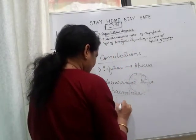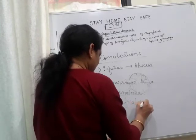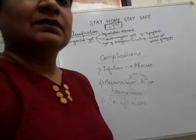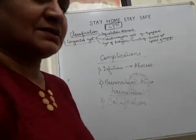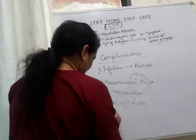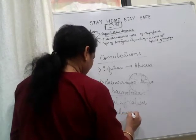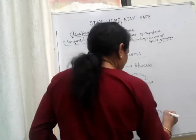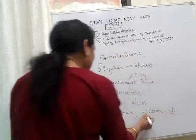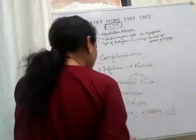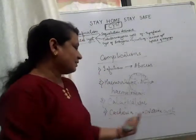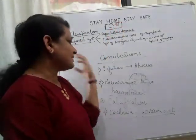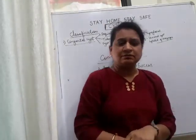Another complication is calcification. In long-standing cases, a cyst can get converted into a calcified mass. There can also be cachexia, usually in cases of malignant ovarian cyst — if the ovarian cyst is malignant and becomes very large, the patient becomes cachectic. So, an ovarian cyst can lead to cachexia. We have now covered cysts — their types, classification, clinical presentation, complications, and management.